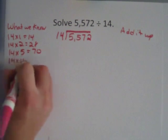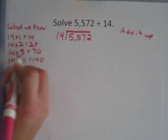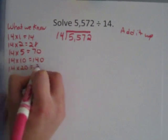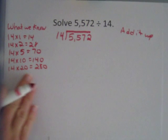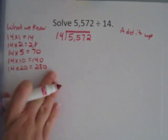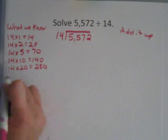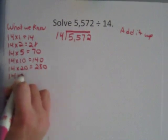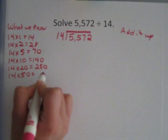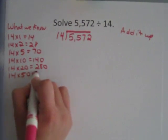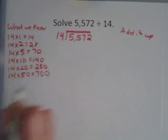14 times 10 is 140. 14 times 20 is 280. I know this because 14 times 2 is 28 with one zero added. So that's how I can easily get to that number. Now I'm going to do 14 times 50, which is 700.